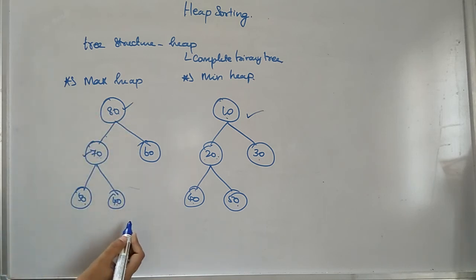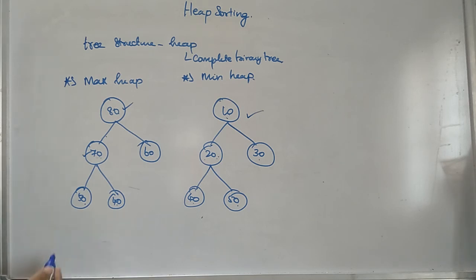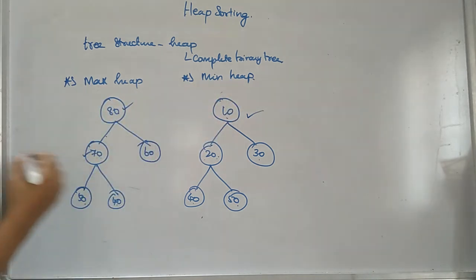It may be a max heap or else it can be a min heap. It must be a complete binary tree. So for sorting the numbers, we are going to either make use of the max heap or the min heap. Let's see the process of sorting in the next video. If you are having any doubt in this concept, kindly post your queries. Thank you.